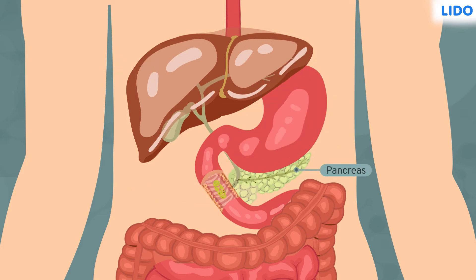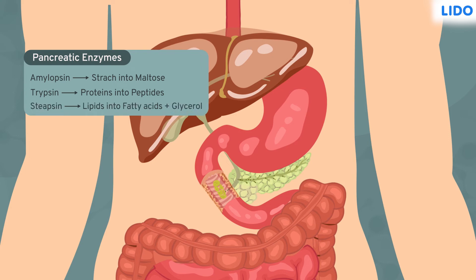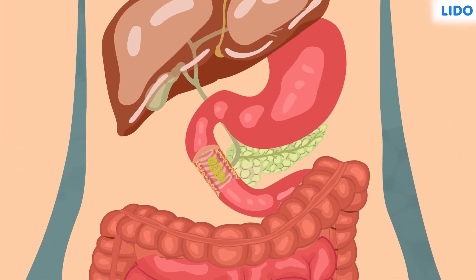Pancreatic juice contains three enzymes. Amylase breaks the undigested starch to maltose. Trypsin breaks the protein to peptides. And steapsin partly breaks lipids to fatty acids and glycerol.